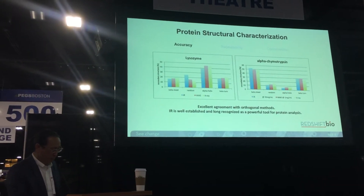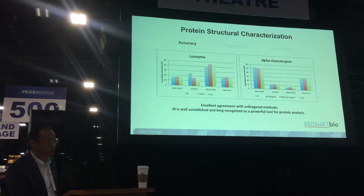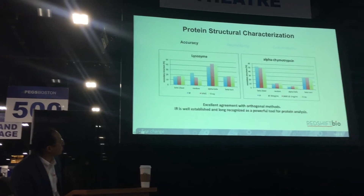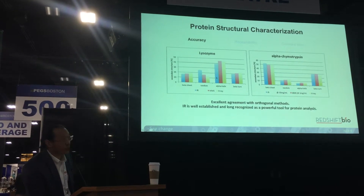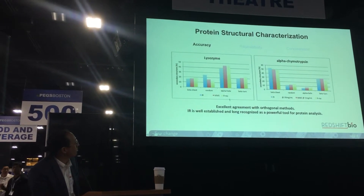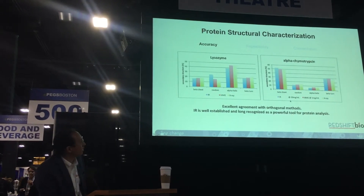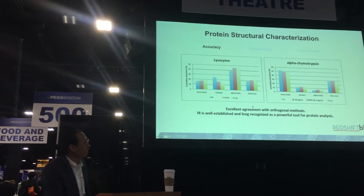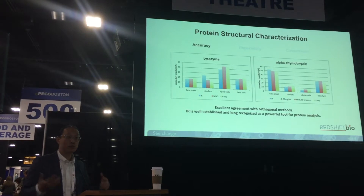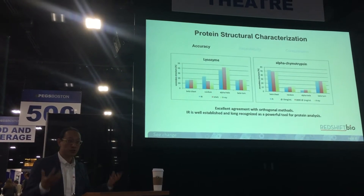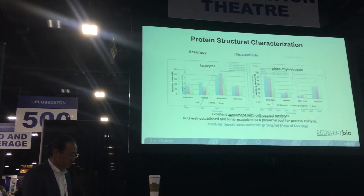How does the tool perform? It's very accurate. Here we're looking at MMS versus orthogonal tool sets — MMS shown in red, X-ray data in green, traditional IR in blue — for both an alpha helix-rich protein and a beta sheet-rich protein. There is very consistent, excellent agreement across the various orthogonal methods. That's no surprise because fundamentally we're using IR data; we're just getting it in a cleaner, easier way. It's very well established.